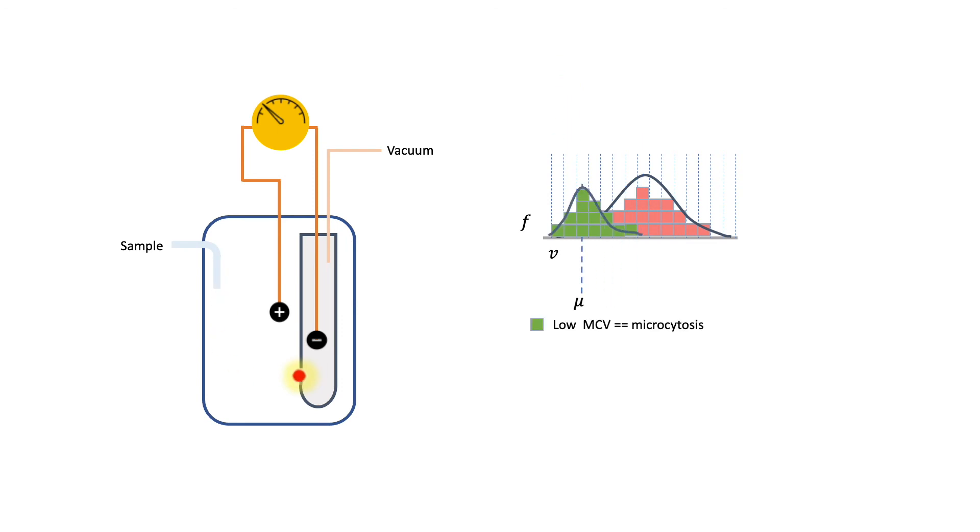While the larger cells will be plotted on the right of the histogram, and this would appear as high MCV. Therefore, a low MCV would denote microcytosis, while a high MCV would denote macrocytosis.